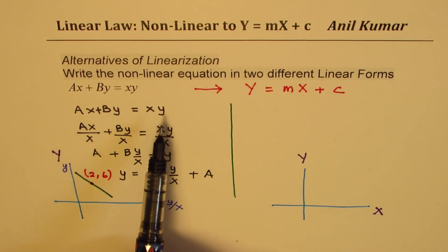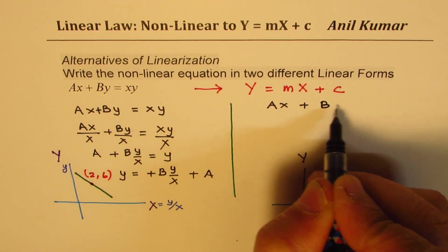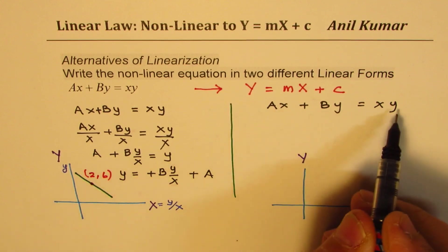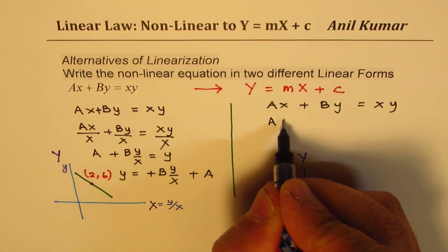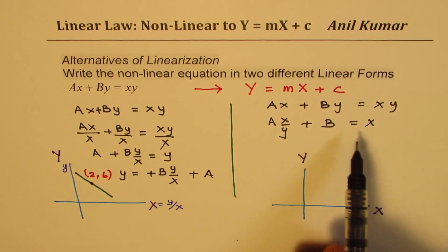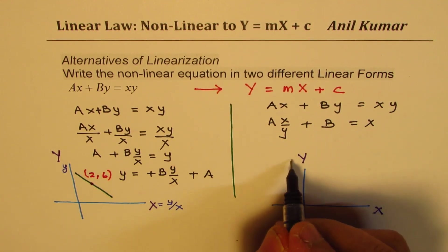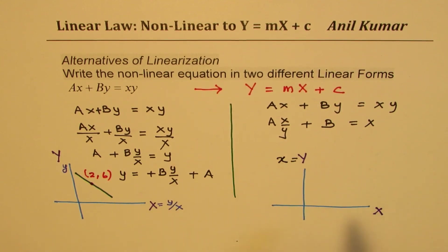Now what I could also do here is divide by Y. So we again start with the same equation AX plus BY equals XY. If I divide by Y this time, so I get AX over Y plus B equals X. Well, so if you look into this equation, capital Y could be small x. So I could write this as equal to small x and on this side I could write X over Y. So that is how we could actually get the second form. So this is also in the form of Y equals MX plus B.